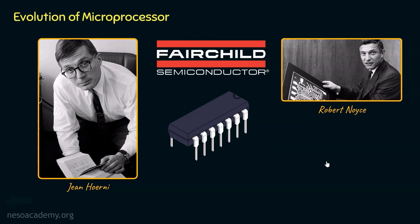The planar process is a semiconductor fabrication technique that involves creating a flat two-dimensional surface on a semiconductor material. Aluminum metallization refers to the process of depositing a layer of aluminum on a substrate — the base material on which the circuit is built. The planar process ensures a flat surface, and using aluminum metallization, we create the electronic wiring within the circuit.